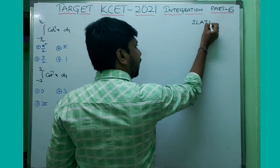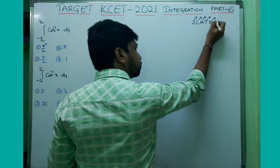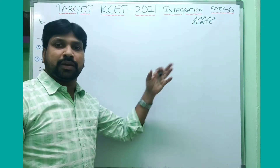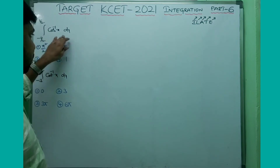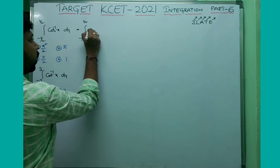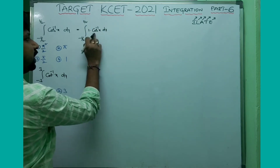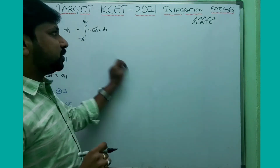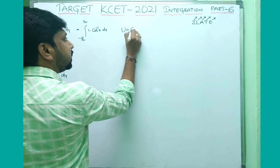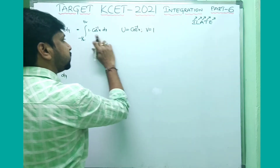According to ILATE: I is inverse function, L is logarithmic function, A is algebraic function, T is trigonometric function, and E is exponential function. Whichever function comes first, that is u; the second one is v. This looks like a single function, but it is not. You have one more function — that is 1. So it can be written as 1 into cos⁻¹x.